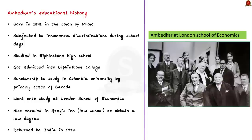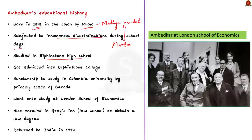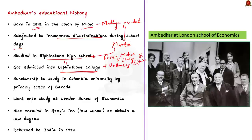Ambedkar was born on 14th April 1891 in the town and military cantonment of Mhow, now located in the state of Madhya Pradesh. Being born in a low caste, he was subjected to innumerable discriminations during his school days. After the initial years of struggle, Ambedkar's family moved to Mumbai in Maharashtra. There he was put into the famous Elphinstone High School and after graduating, he got admitted into Elphinstone College, affiliated to the University of Bombay. Ambedkar was the first among his caste to get admission into Elphinstone College. By 1912, he completed his degree in Economics and Political Science from Bombay University.